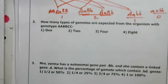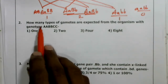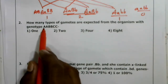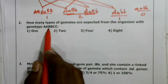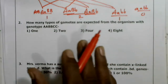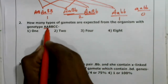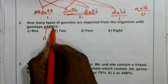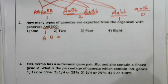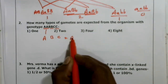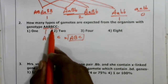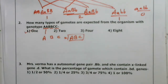Second question: how many types of gametes are expected from an organism with genotype capital A capital A capital B capital B capital C capital C? These are in homozygous conditions. From these two alleles we take one, from the next two we take one, and from these two we take one. When you combine all three, you get only one gamete: ABC. You won't get any variety because these are homozygous — so the answer is one. First option is correct.